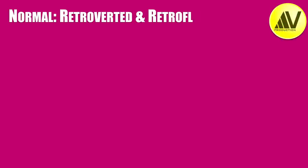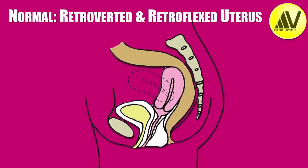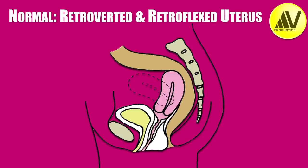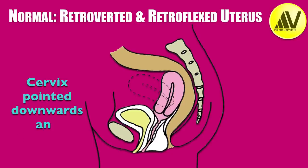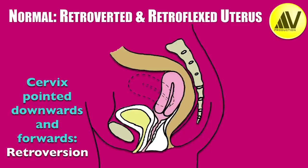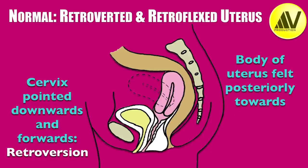Alternatively, or more commonly, the uterus and cervix can also be in a retroverted and retroflexed position. When one does a bimanual examination, if the cervix is pointed downwards and forwards — that is, the external os is towards the bladder — it is referred to as the retroverted position. And if the body of the uterus is felt towards the rectum, it is called retroflexion, as shown in this diagram.